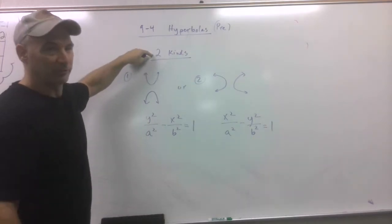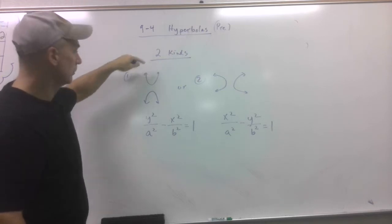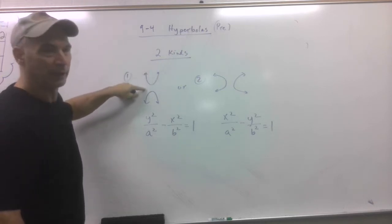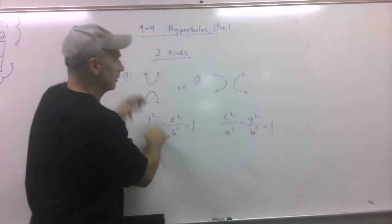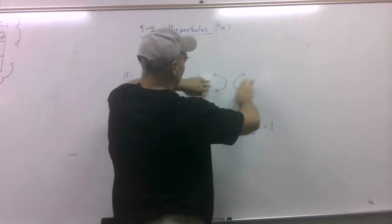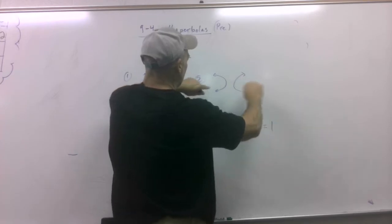There are two kinds of hyperbolas. This kind, what are they? Two parabolas facing opposite directions, or up and down. Or two parabolas facing opposite directions right and left.